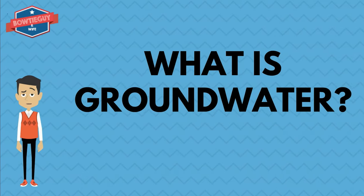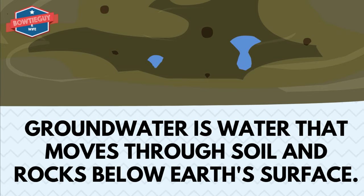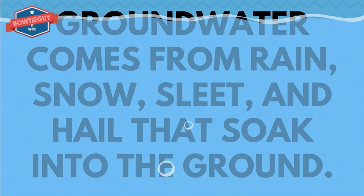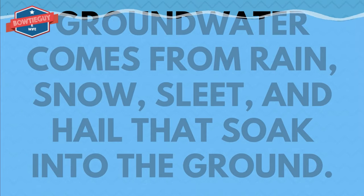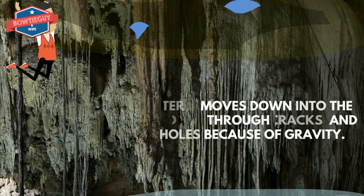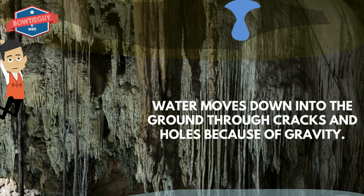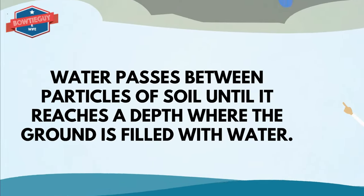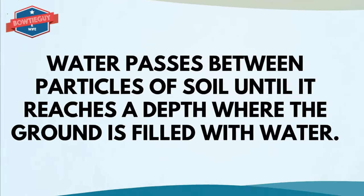What is groundwater? Groundwater is water that moves through soil and rocks below Earth's surface. Groundwater comes from rain, snow, sleet, and hail that soak into the ground. Water moves down into the ground through cracks and holes because of gravity. Water passes between particles of soil until it reaches a depth where the ground is filled with water.